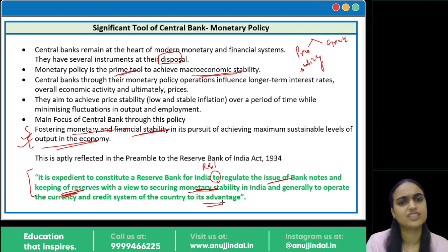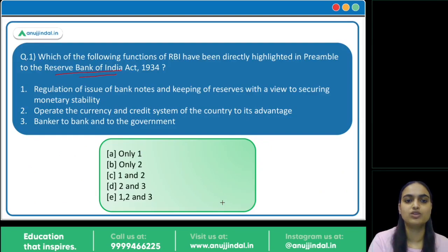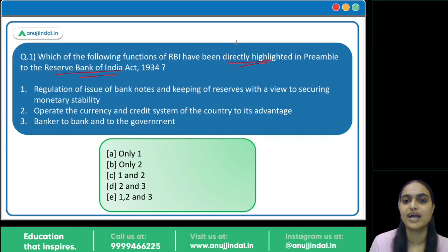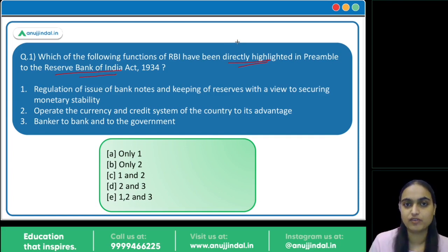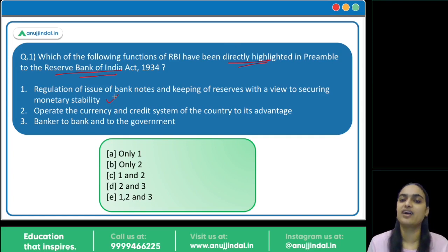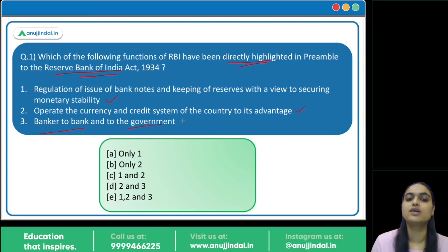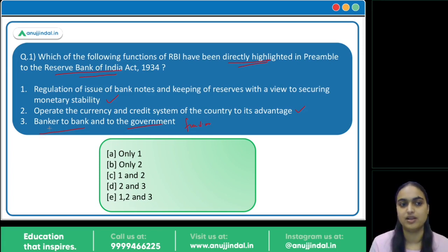Let's discuss the first question before moving ahead, as it will be answered from this slide. The question asks which functions have been directly highlighted in the preamble. Two things are directly highlighted: first, regulate the issue of notes and keep reserves to maintain monetary stability; second, operate the currency and credit system for the country's advantage. Banker to banks and government is a function of RBI but not directly in the preamble. So the answer is option C.